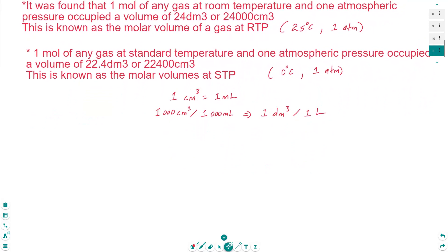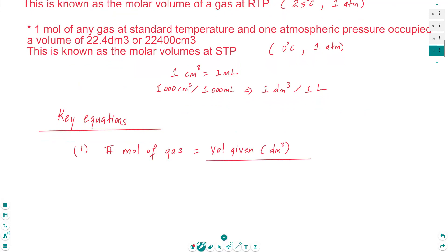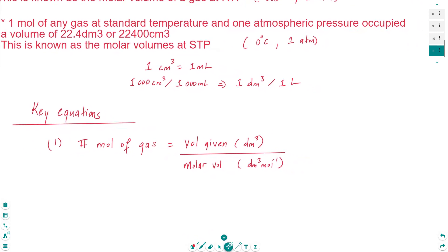Now that we know what to do with gases, let's look at some key equations. We need to know what conditions we are operating under — the question should tell you whether you are working at RTP or STP. To find the number of moles of a gas, the number of moles equals the volume given divided by the molar volume. If the volume is in dm³, divide by the molar volume in dm³ per mole, and that gives you the moles.